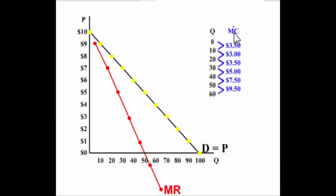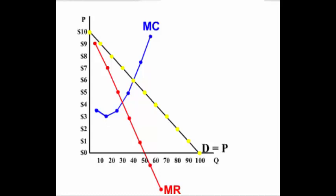Monopoly is not allocatively efficient. Let's put the marginal cost curve on this graph. The monopolist is going to produce 30 units because that's where MR is equal to MC, and it's going to charge a price of seven dollars in the marketplace.